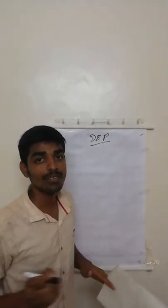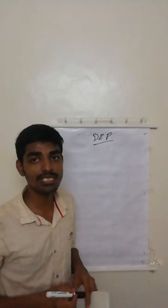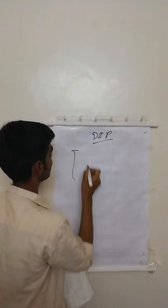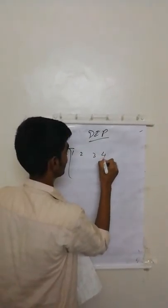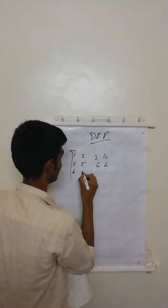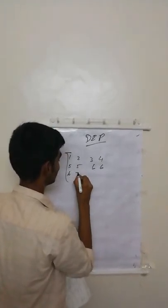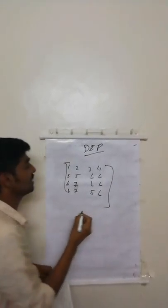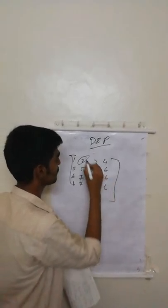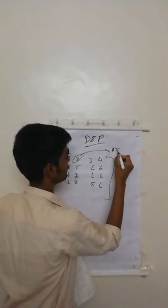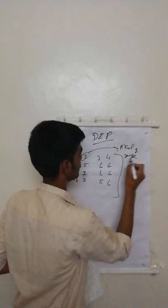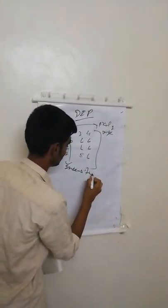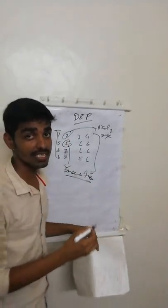Pixels are generally represented in a matrix form. We have to enhance the pixels in the matrix form to give a higher contrast to images. In this matrix, each element represents the pixel of an image, and the values in the matrix represent the intensities. Let's see how to enhance the image.